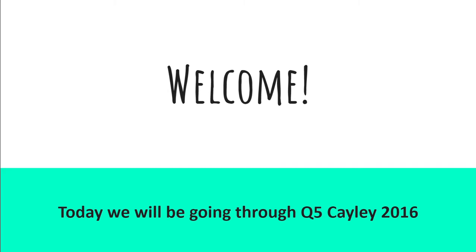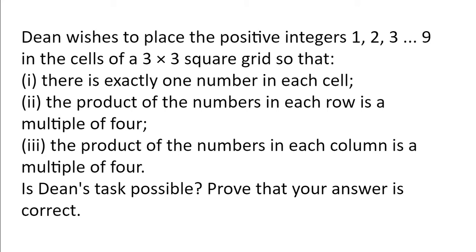Welcome. Today we will be going through question 5 of the Cayley Olympiad 2016. Dean wishes to place the positive integers 1, 2, 3 to 9 in the cells of a 3 by 3 square grid.